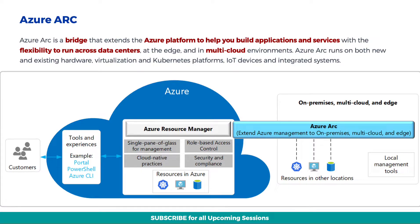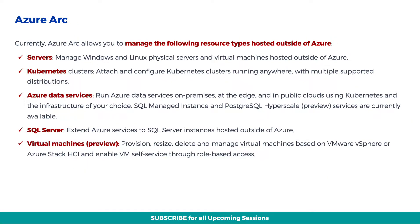As you can see in the diagram, you can manage multiple clouds and on-premises resources, all in one place — that is in Azure Resource Manager. In terms of what resources can be managed, Azure Arc allows you to manage the following resource types hosted outside of Azure.